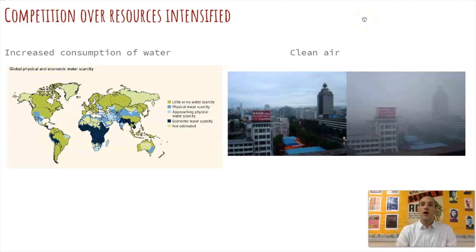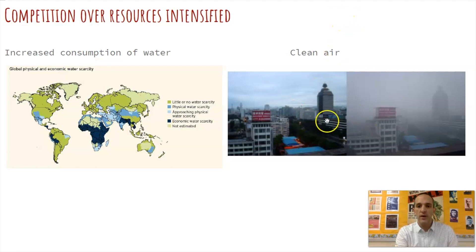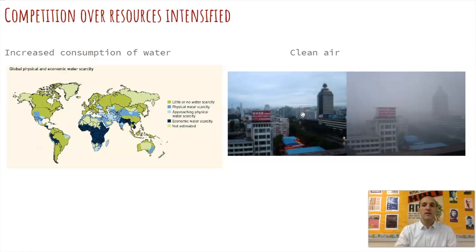We also have clean air as an issue. A lot of developing countries that are manufacturing economies are polluting the environment with very limited pollution controls. This is an example of what it looks like when a city gets hit with smog and pollution. We see this worst in industrialized cities in China with smog days, and also in LA with smog alert days where you're supposed to be careful going outside.